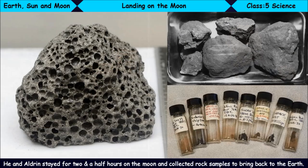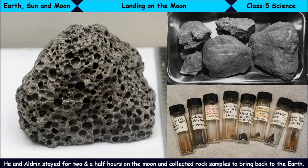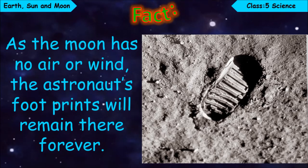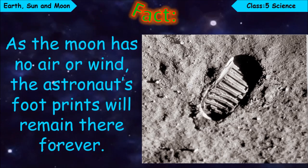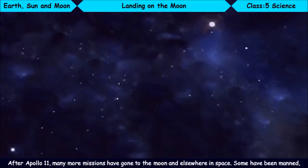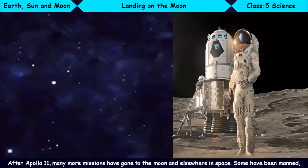He and Aldrin stayed for two and a half hours on the Moon and collected rock samples to bring back to the Earth. Fact: As the Moon has no air or wind, the astronauts' footprints will remain there forever.